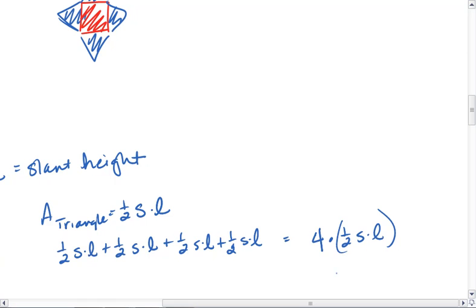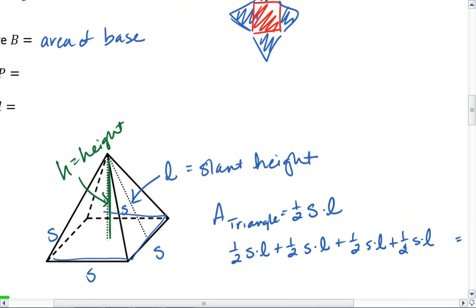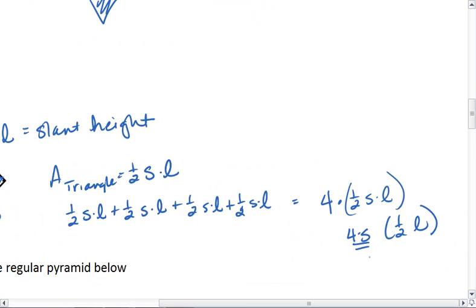If I rearrange this, I get four times s, 1 half times the slant height. Well, here's the really cool part, 4s is the perimeter of my square, it's the perimeter of my base. So I realized that this is the same as the perimeter times one half my slant height.